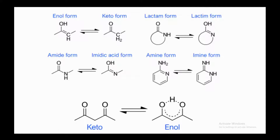The next type is amine–imine tautomerism, which occurs when an NH2 group is present in an aromatic ring. One hydrogen from the NH2 nitrogen migrates into the ring, and the double bond between the ring nitrogen and adjacent carbon moves outward to form an imine functionality (C=N–H). Imine has C=N, while amine has NH2 — that is the key difference.